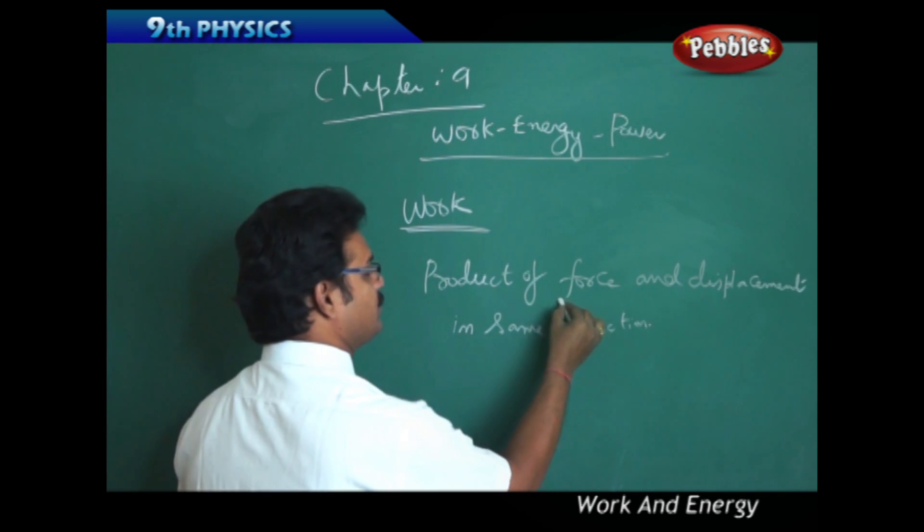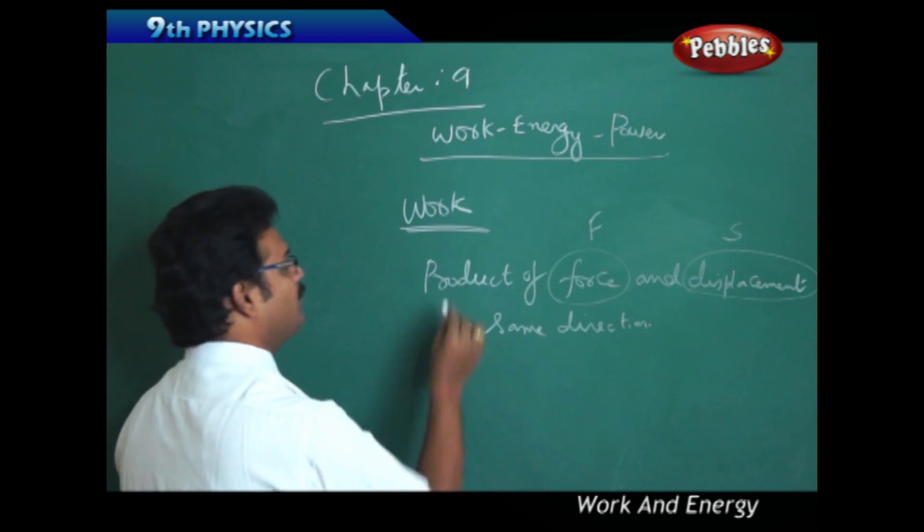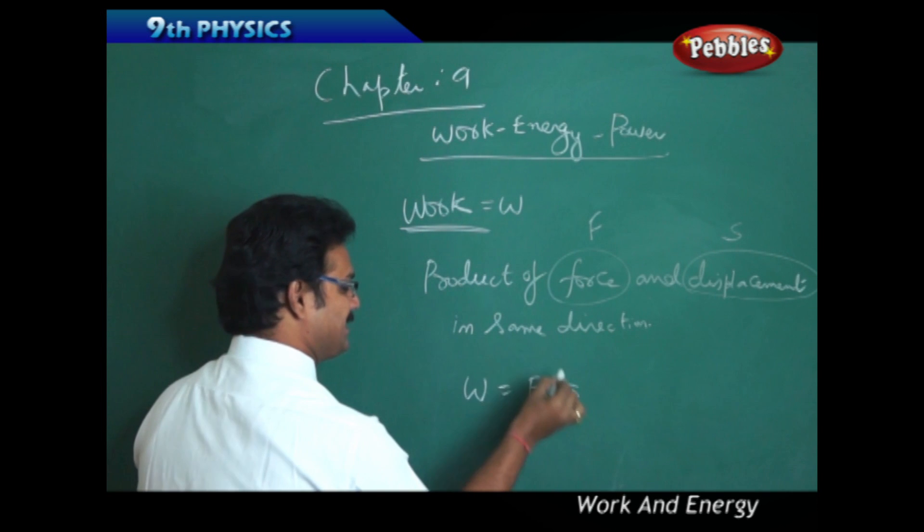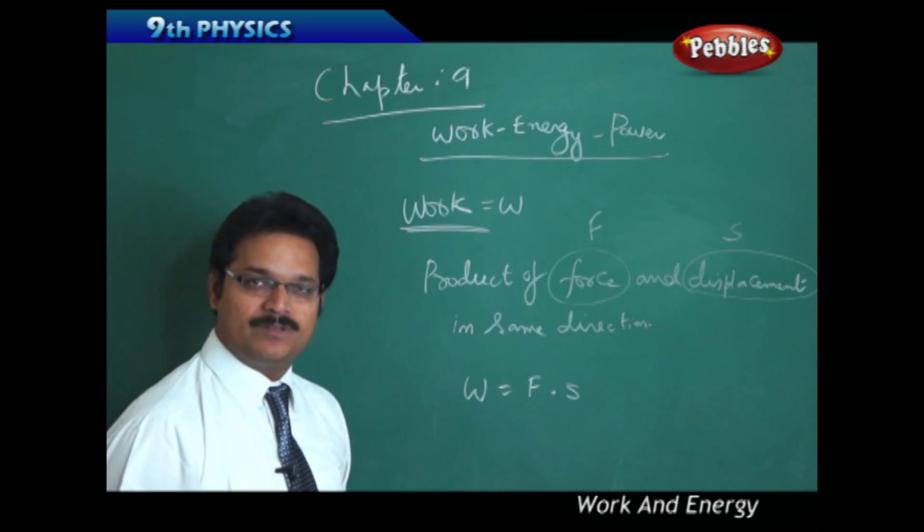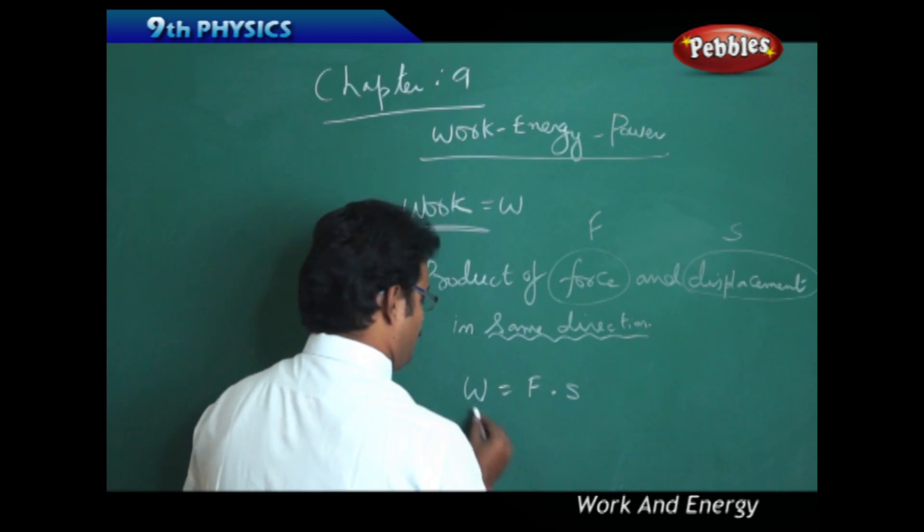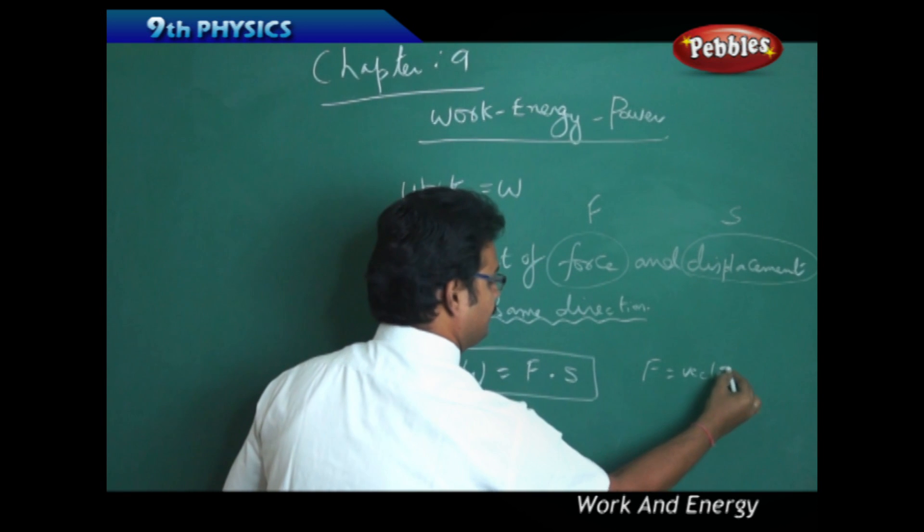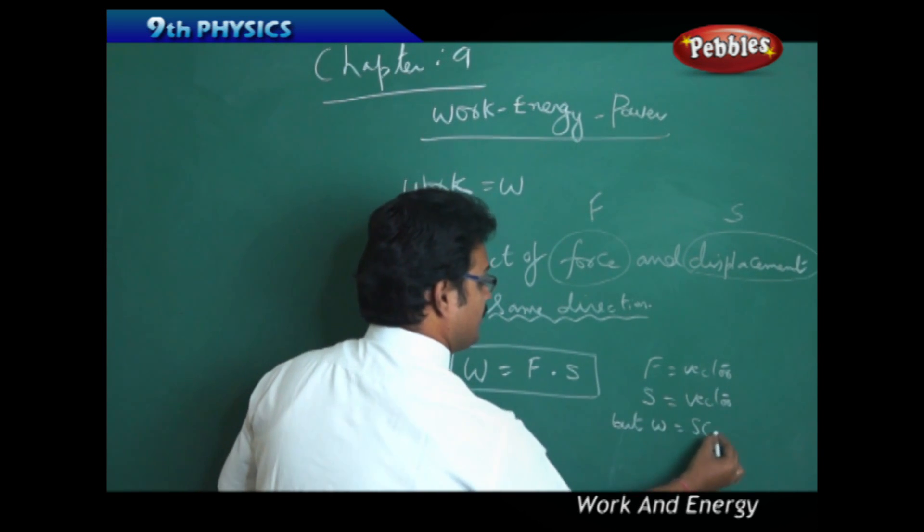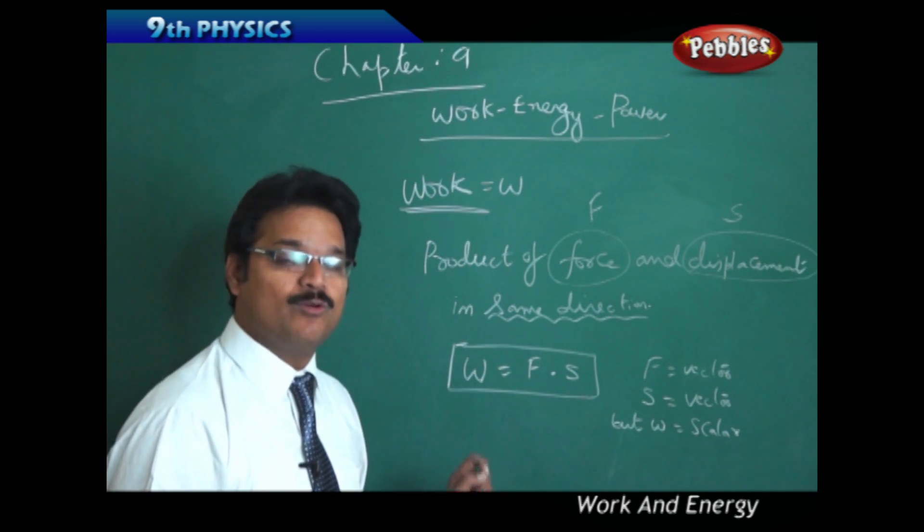Force is represented by the symbol F, displacement is represented by the symbol S, work is represented by symbol W. Therefore W equals to F into S. This 'into' in physics we call as product, so force into displacement. Force is a vector quantity, displacement is also a vector quantity, but work is a scalar quantity. Work doesn't have direction, it is attached to magnitude.